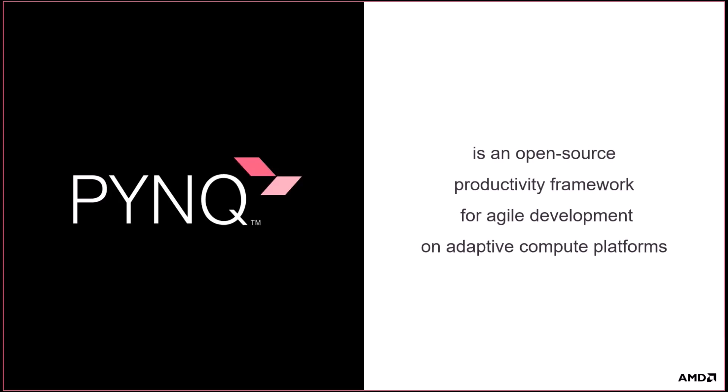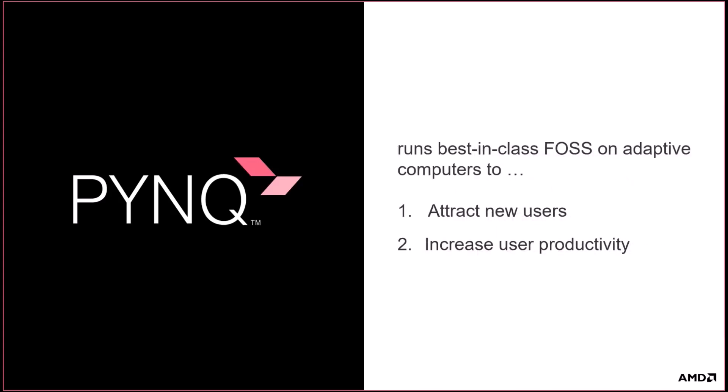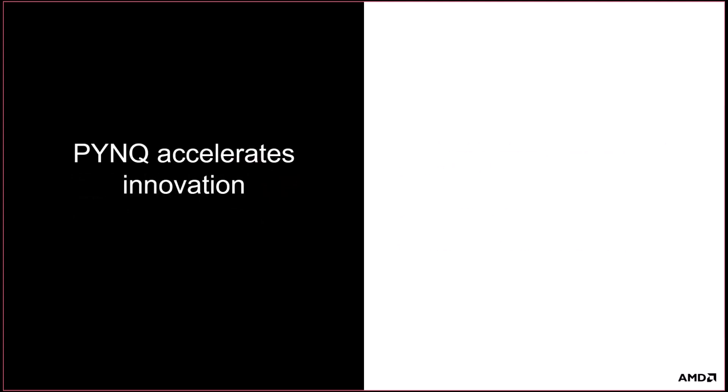Welcome to this introductory video on PINK. My name is Patrick Lysat, and in this video, my colleagues and I will present an overview of PINK, the aims of the project, how it is architected around open source software, and how it is being received in the community. PINK is a free open source software framework that runs directly on Xilinx adaptive compute platforms, exploiting higher levels of design abstraction and enabling rapid prototyping for greater productivity. PINK's primary goals are to attract new users to adaptive computing and to increase the productivity of new and existing users.